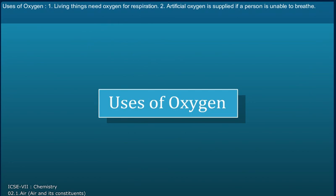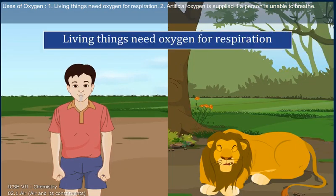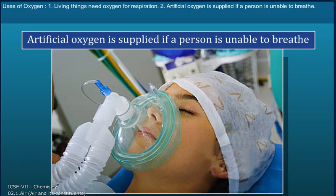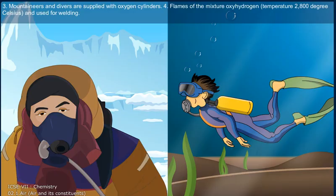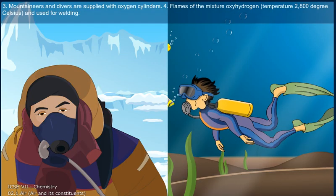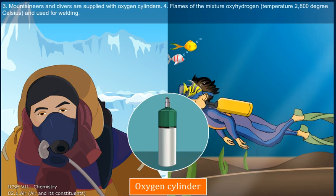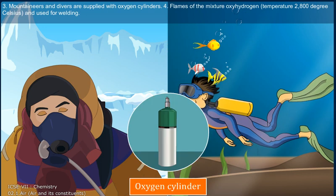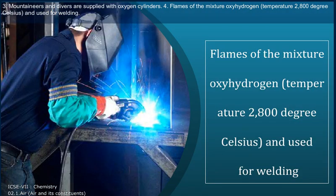Uses of oxygen: 1. Living things need oxygen for respiration. 2. Artificial oxygen is supplied if a person is unable to breathe. 3. Mountaineers and divers are supplied with oxygen cylinders. 4. The oxyhydrogen flame reaches a temperature of 2800 degrees Celsius and is used for welding.